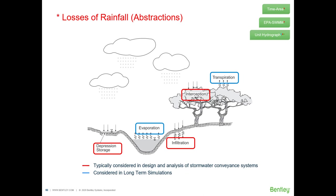The second concept we're going to cover is losses of rainfall, also called abstractions. Not all rainfall becomes runoff — some is intercepted by vegetation, some infiltrates into the ground, some is retained as depression storage in puddles, swales, or ponds, and some returns to the atmosphere through transpiration and evaporation. These five concepts are called abstractions.